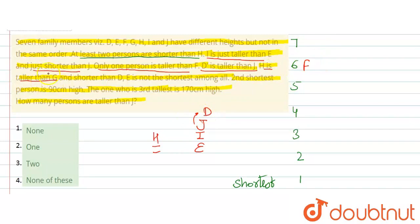Phir given hai, H is taller than G. H jo hai, wo G se bada hai. So G se upar aayega and is shorter than D. That means H jo hai, wo D se niche aayega. E is not the shortest among all. That means yahan par bottom par aapka E nahi aayega.